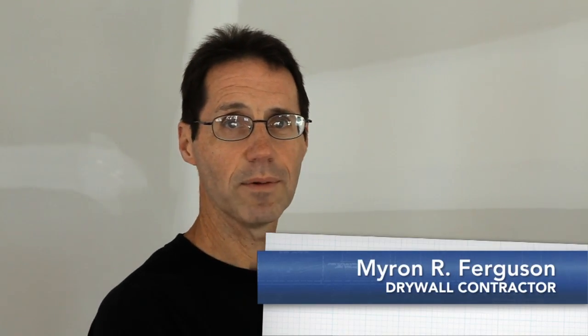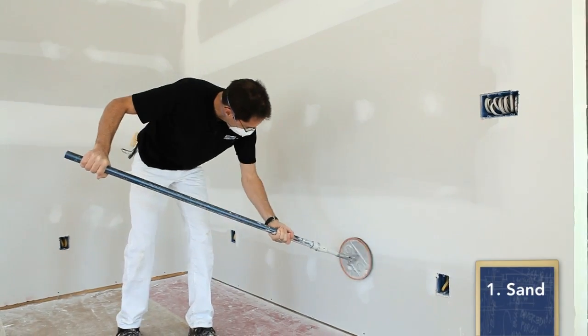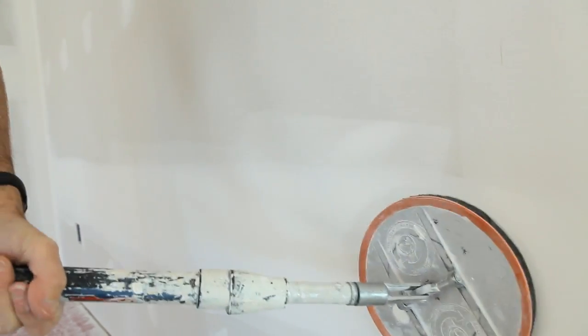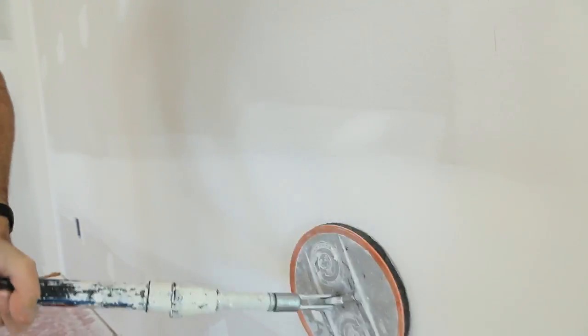What I'm going to do here today is apply a level 5 finish to this wall. A level 5 finish is the highest level of finish for drywall. First thing I'm going to do is take a pole sander and sand this surface. And that's all I would normally do and I'd be done, which is a typical finish.